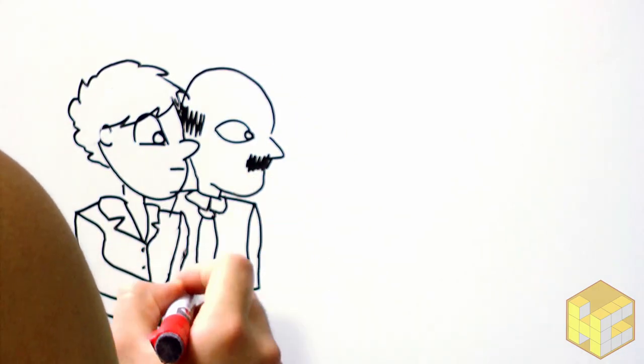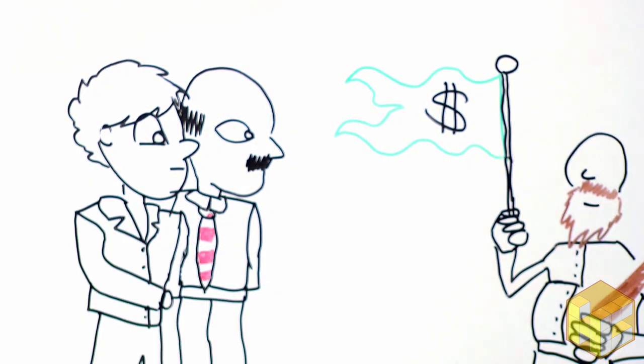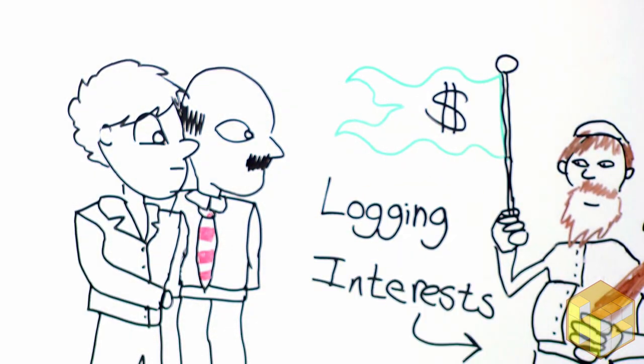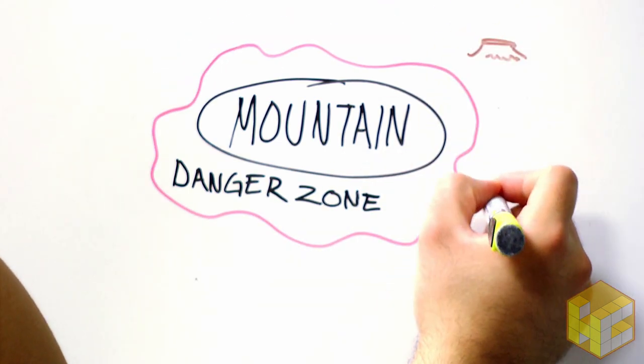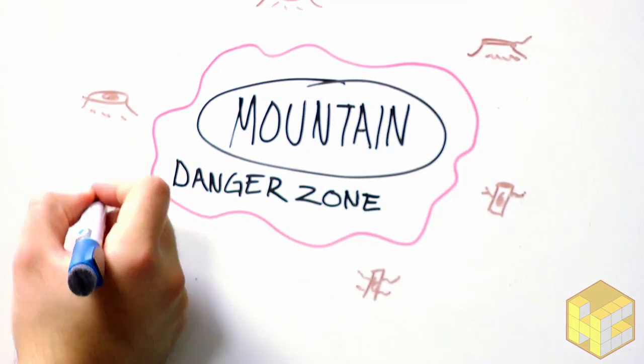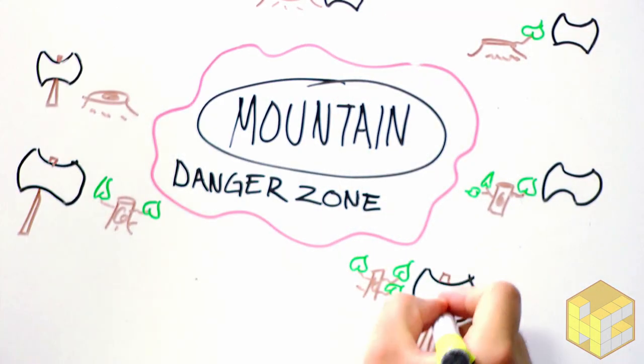Meanwhile, local government officials responsible for implementing the danger zone near the mountain decided, under the influence of logging interests, to keep the danger zone small and allow logging of old-growth forests near the mountain. If the mountain had exploded during the week rather than a Sunday, they would have all died.